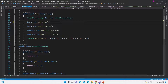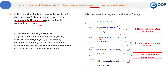Once again, the definition: method overloading is a type of polymorphism in which we can create multiple methods of the same name in the same class, and all methods work in different ways. I hope this concept is clear to you now. If you have any queries, please post them in the comment section.